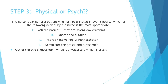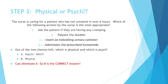Step three: physical or psych? Looking at our two remaining answer choices A and B. Out of A, asking the patient if they're having any cramping — that's psych, because pain is always psych. Cramping, aching, stabbing — it doesn't matter what kind of pain they're in, it's psychological. But palpating the bladder is physical. So now we've eliminated A, and B is our correct answer. In this question, you actually got to the correct answer without even going to the other two steps.